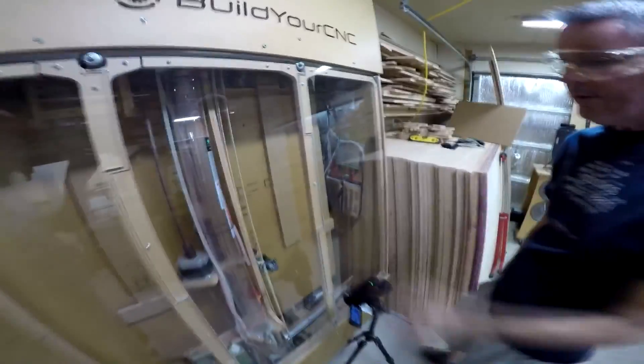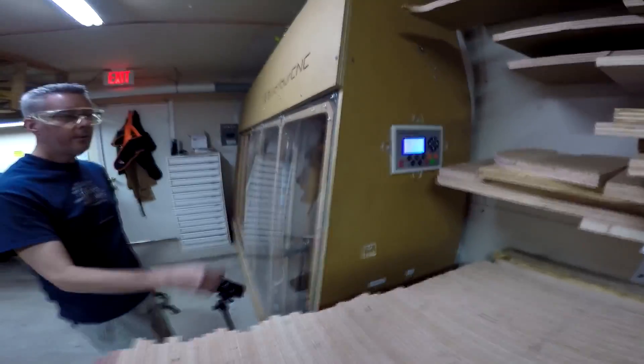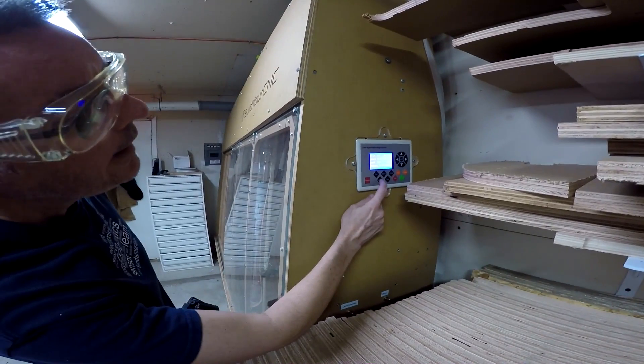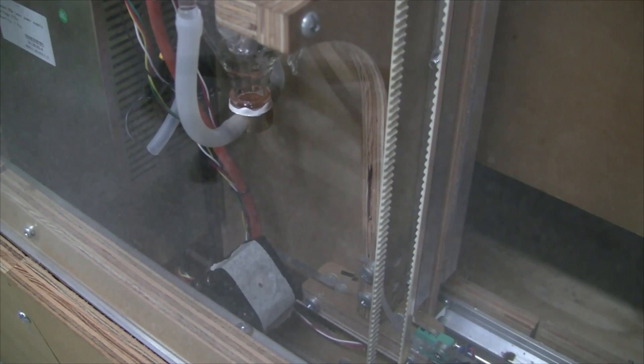Okay before we turn it on you want to make sure that you have the water going through the laser tube. You want to make sure that the laser power supply is plugged in and on. It has power. Now we're going to press the laser button to turn the laser on to do a test.